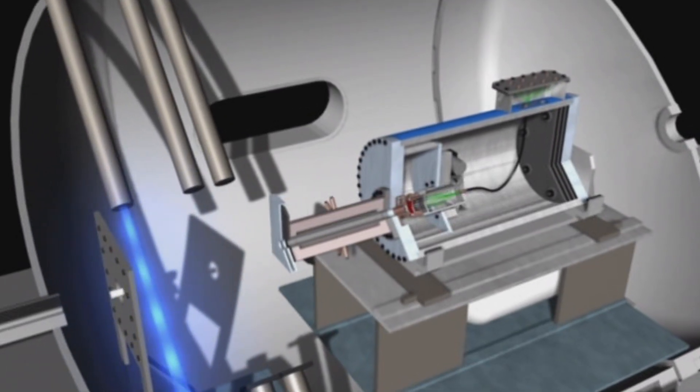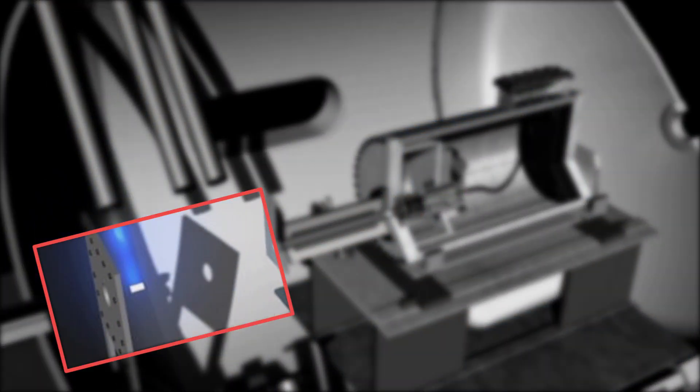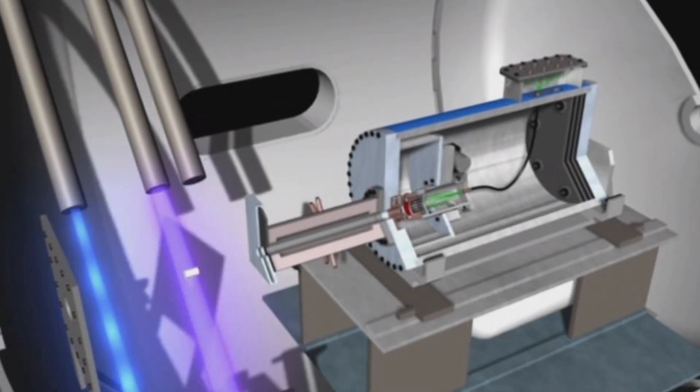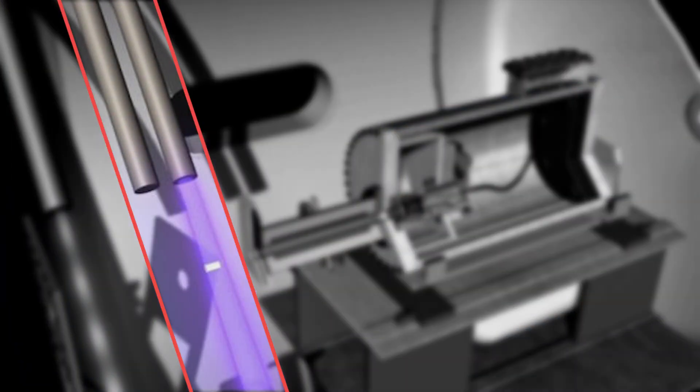As the projectile travels through a free flight zone, a continuous wave x-ray system detects the projectile. This system serves as the primary trigger for both the diagnostic and confinement systems. The two flash x-rays photograph the projectile in flight.